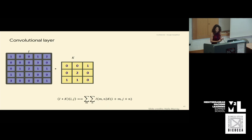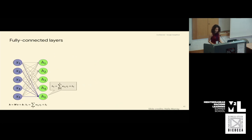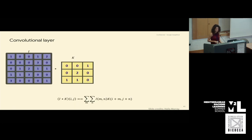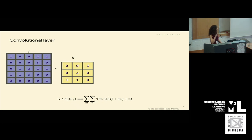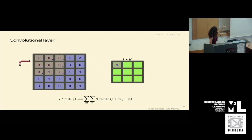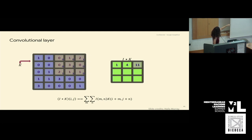Next we'll talk about the convolutional layer. Given an image — a 2D matrix — we also have a convolution kernel, which is also 2D. We put the kernel on each part of the image and slide it from left to right, top to bottom, doing a dot product: multiplying each element with each other and summing them up. If we slide it by 1 — stride 1 — then we get 1 plus 1 plus 2 equals 4. And if we do another stride, then it is 2 plus 6 plus 2 plus 1.